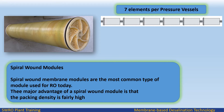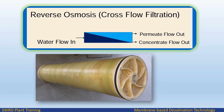Spiral wound membrane modules are the most common type of module used for RO today. The major advantage of a spiral wound module is that the packing density is fairly high. In crossflow filtration, feed water passes tangentially over the membrane surface rather than perpendicularly to it. Water and some dissolved solids pass through the membrane, while the majority of dissolved solids and some water do not pass through. Crossflow helps to minimize fouling or scaling of the RO membrane.